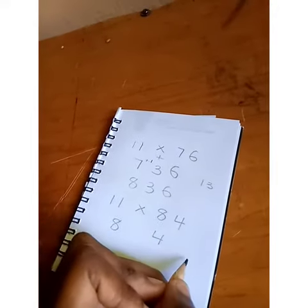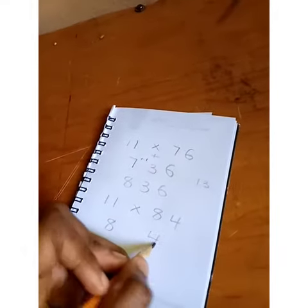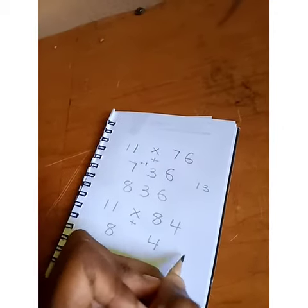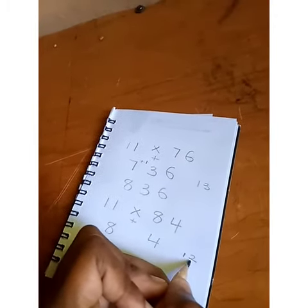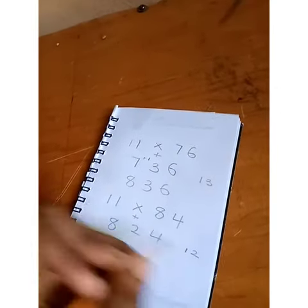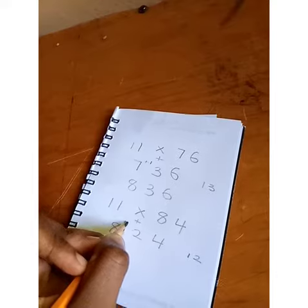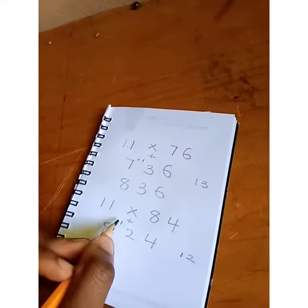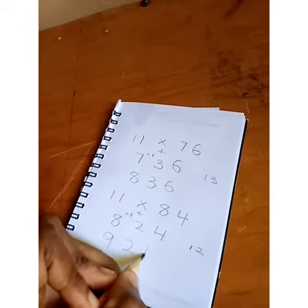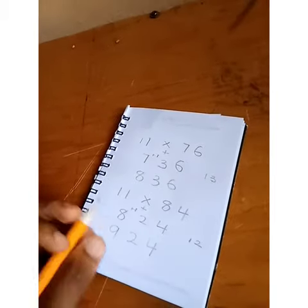8 plus 4 gives you 12. Put your 2 right in the middle, then carry the 1 over to 8. That's 8 plus 1, which equals 9. So you have 924. Easy and simple. Thank you for watching.